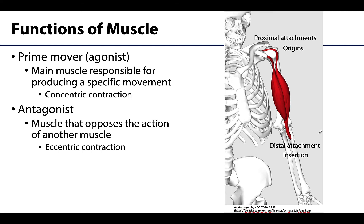So let's talk a little bit about these roles. The first one is usually the easiest to understand, and it's a prime mover. A prime mover is exactly what it sounds like — it is the main mover or the main muscle responsible for producing the concentric movement. These will be the muscles using the most energy for that movement, and this will be the most forceful of the contractions. Usually there is just one prime mover, but occasionally there can be two.